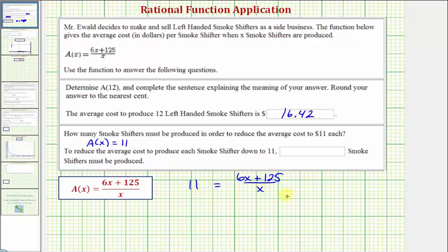the first step would be to clear the fractions by multiplying both sides of the equation by x. Notice on the left side we have 11x equals, on the right side notice x over x simplifies to 1. So we have 6x plus 125.